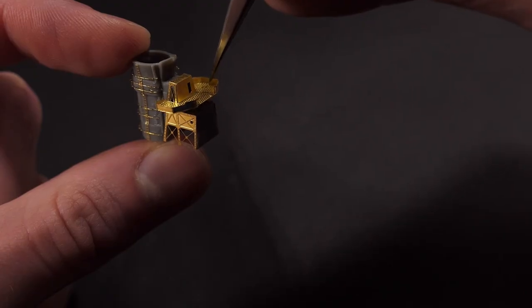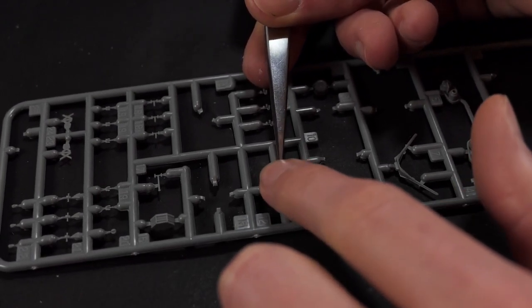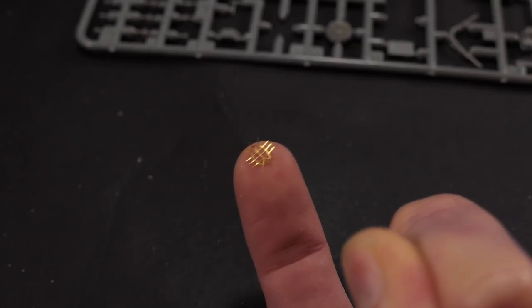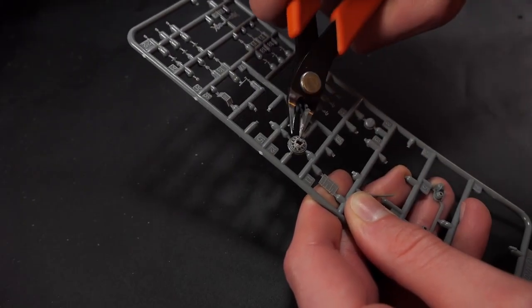Sometimes when I replace a plastic part with photo etch, like what I'm going to do here with the cage that goes on top of the stack, I'll leave it intact and then bend the photo etch around it before I demolish it with my plastic cutters.